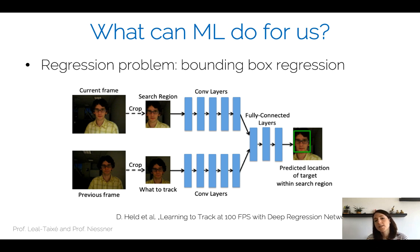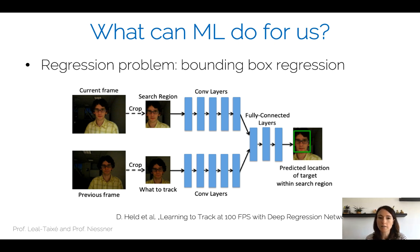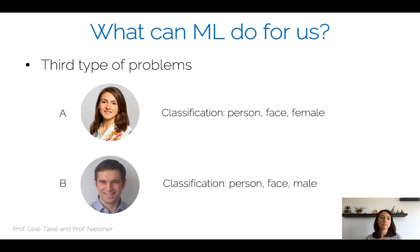We can already see something interesting here: there are two processing pipelines, one for the current frame and one for the previous frame, running in parallel. We will see many examples like this today, because this is in fact a Siamese network architecture.